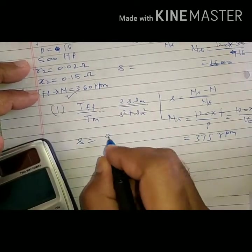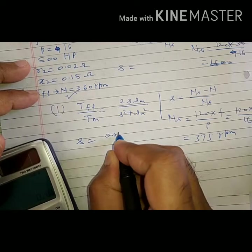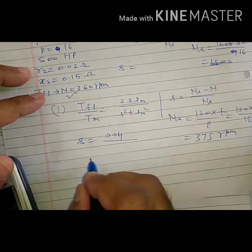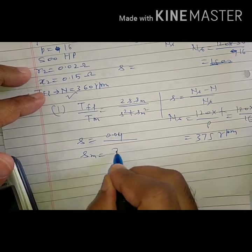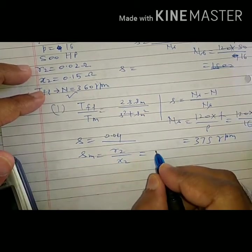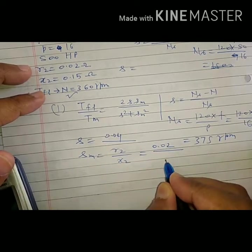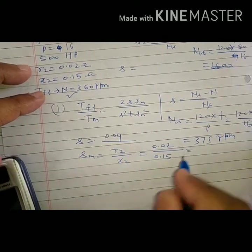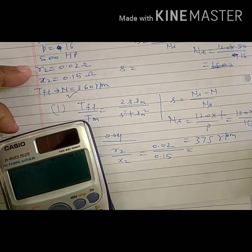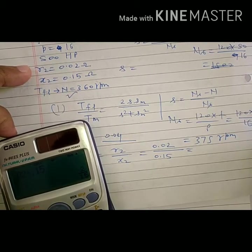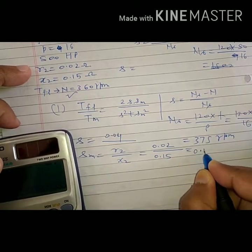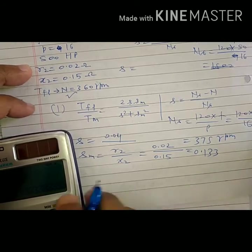Slip is coming as 0.04. Now what is SM? SM will be R2 by X2 by formula. So R2 is given 0.02 and X2 is 0.15, so we got this value as 0.133.